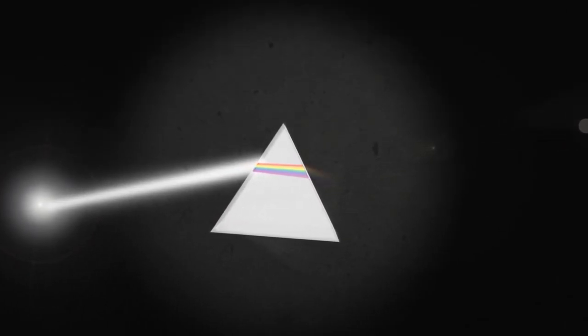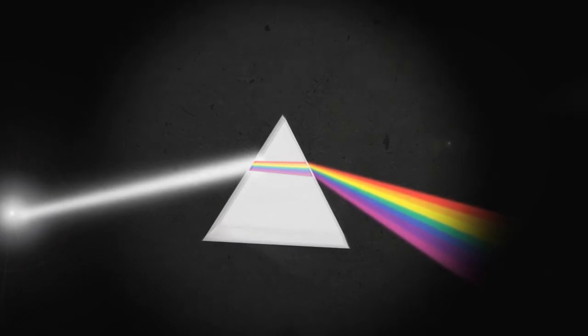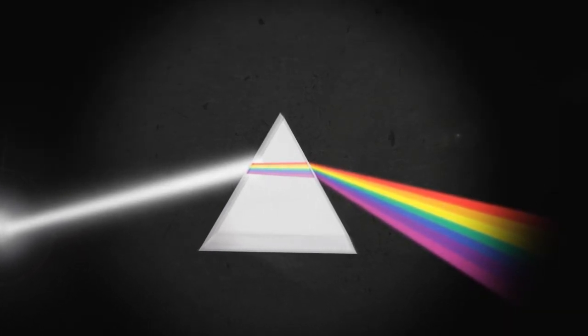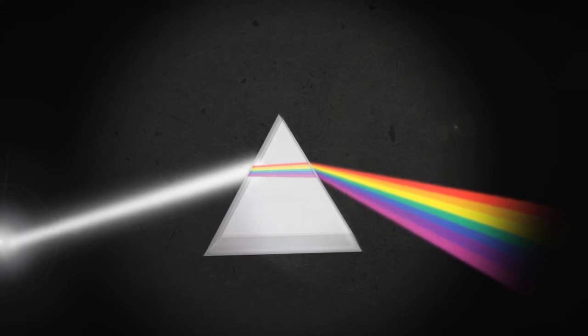Each colour in a ray is bent at a different angle, allowing seven colours to be seen. The red light gets bent the least, while the violet light bends the most.